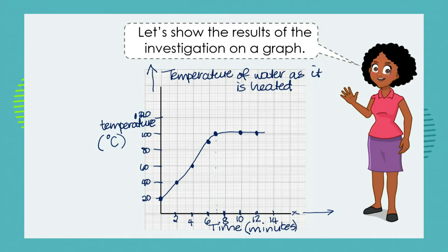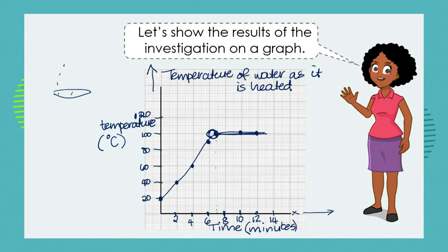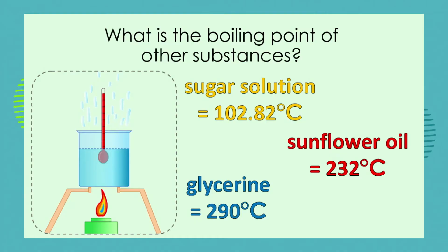If we plot our graph and join the points, we get a line showing the temperature of water as it is heated. We can plot boiling point at the temperature at which boiling started, after which the temperature didn't increase inside the water. You may know that the steam or water vapour rising from your pot is hotter than 100 degrees and can burn you very badly. We know that water has a boiling point of 100 degrees C.